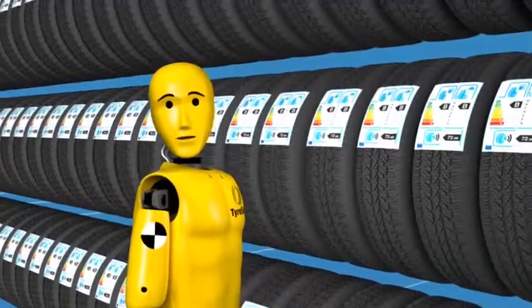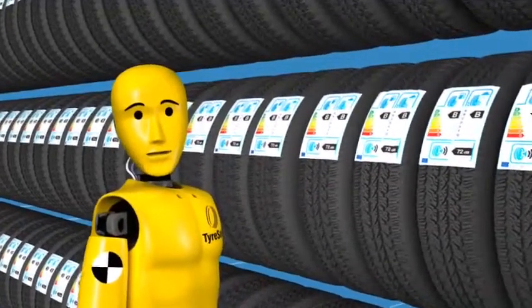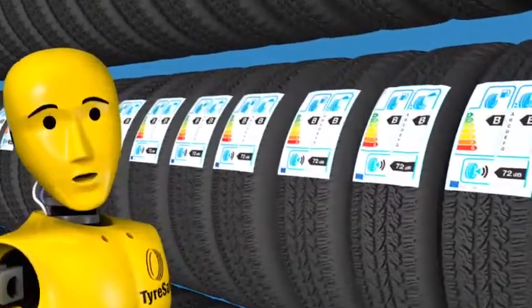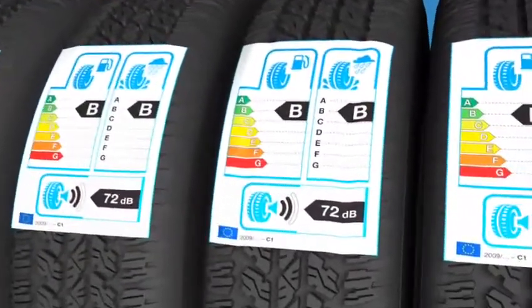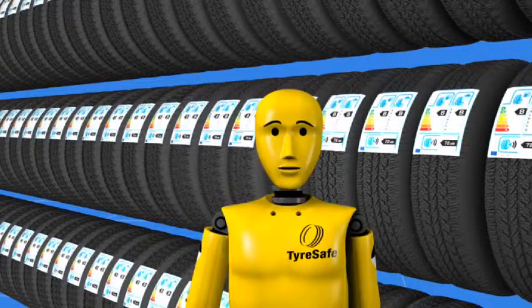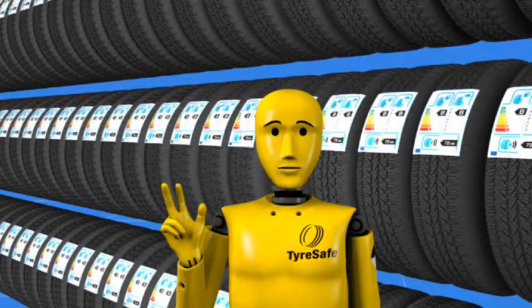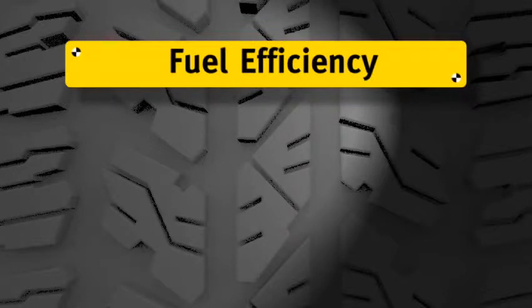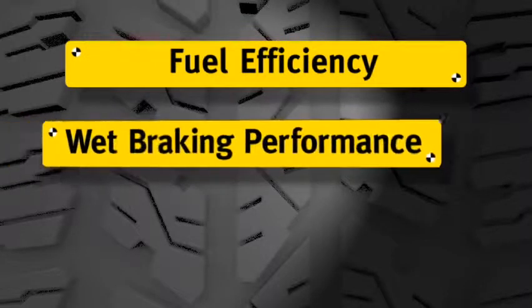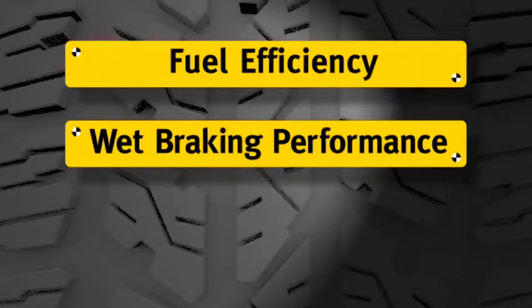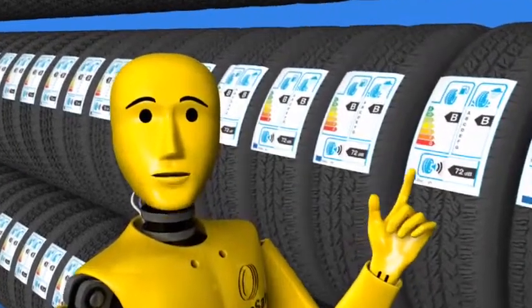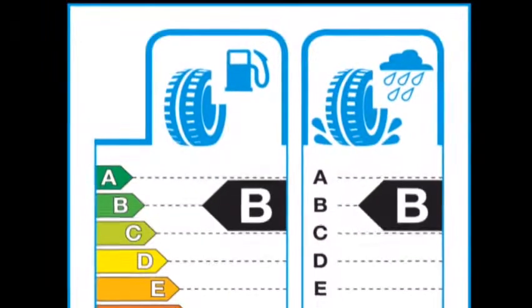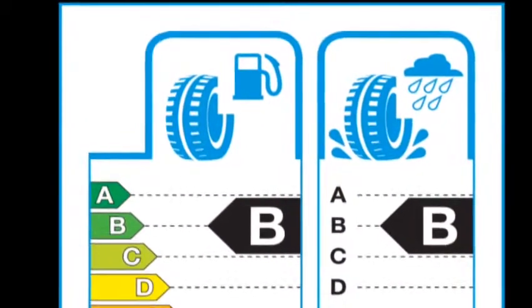From the 1st of November 2012, all new car tires will be labeled to give you a more informed choice when choosing a replacement for your vehicle. Every new car tire will be rated on three key factors: their fuel efficiency, their wet braking performance, and their exterior noise emissions. Let's see how things will look. Firstly, fuel efficiency, which is important to help reduce your driving costs and CO2 emissions.